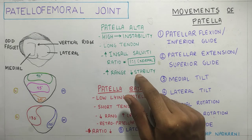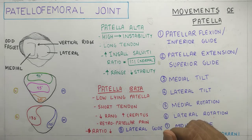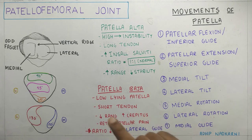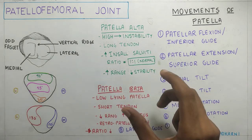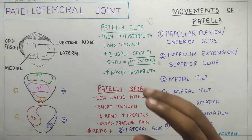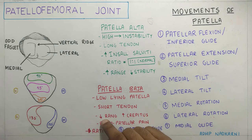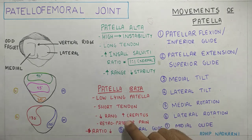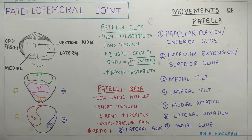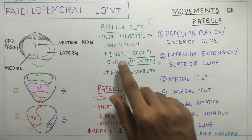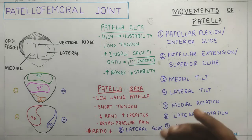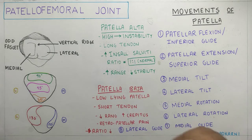In patella baja, the tendon is shorter, so the patella is placed more inferiorly. Because of this, the range of motion at the knee joint is reduced, and you can also experience increased crepitus and retropatellar pain — that is pain behind the patella or behind the kneecap. The Insall-Salvati ratio is reduced in patella baja and increased in patella alta.